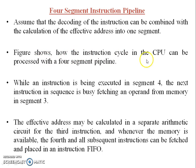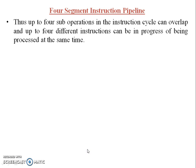The next figure shows how the instruction cycle in the CPU can be processed with a four-segment pipeline. While an instruction is being executed in segment four, the next instruction in sequence is busy fetching an operand from memory in segment three. The effective address may be calculated in a separate arithmetic circuit for the third instruction. Whenever memory is available, the fourth and all subsequent instructions can be fetched and placed in an instruction FIFO. Thus, up to four sub-operations in the instruction cycle can overlap, and up to four different instructions can be in progress at the same time — all segments working simultaneously with different instructions.